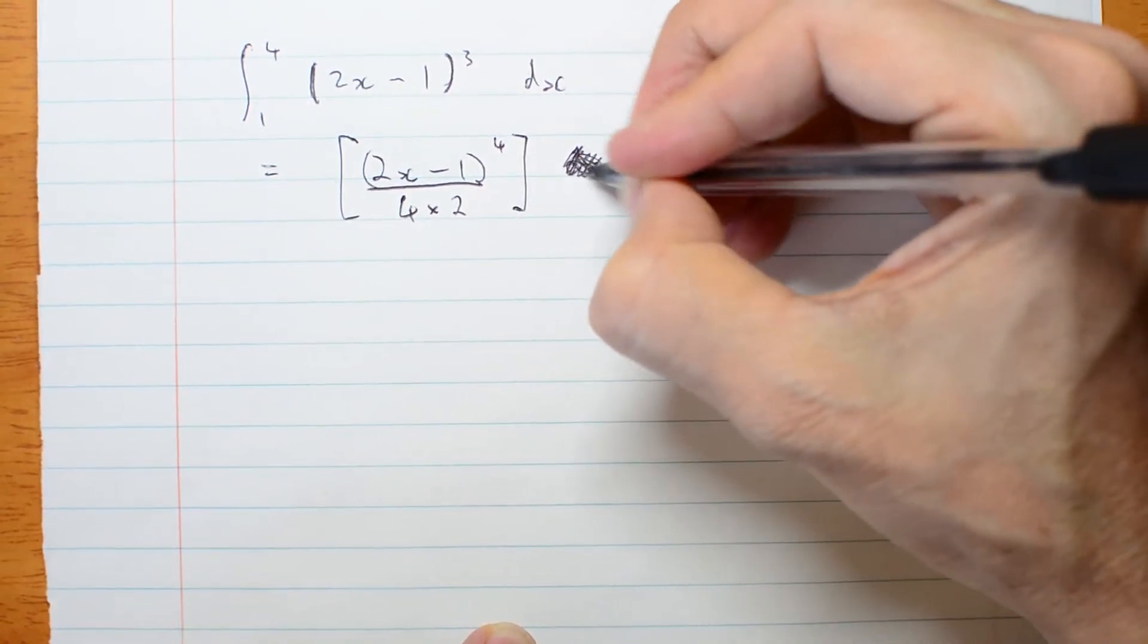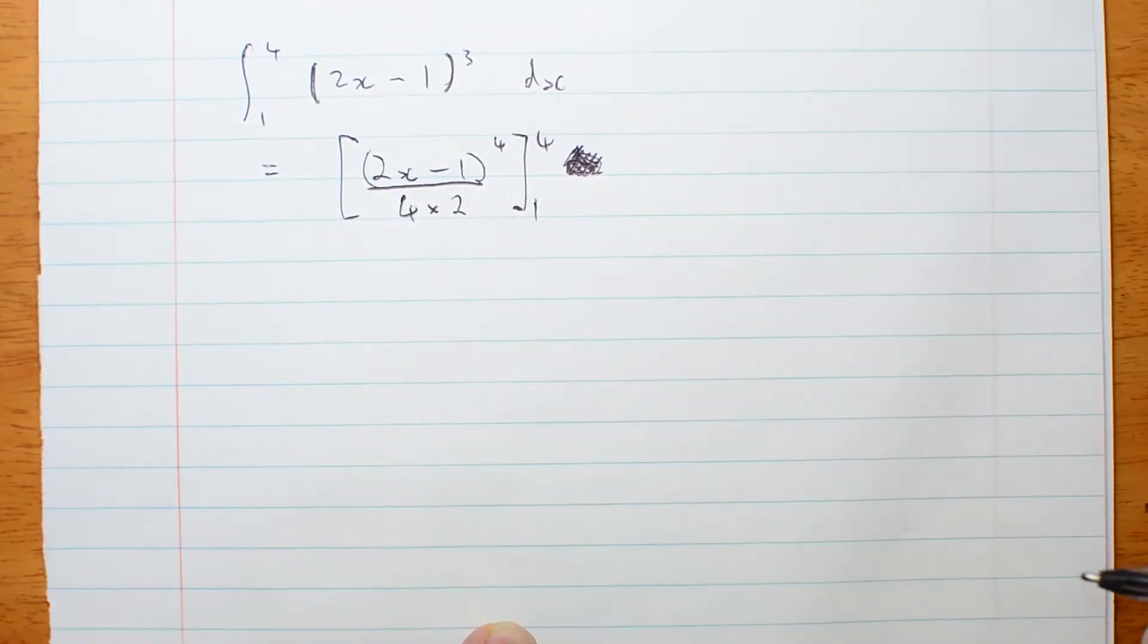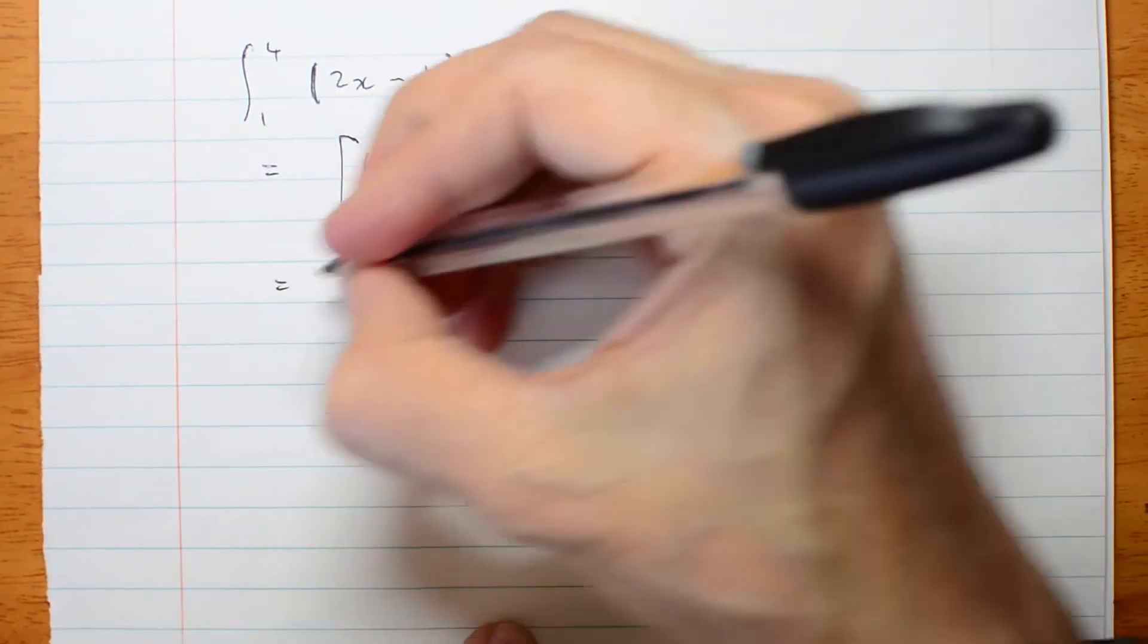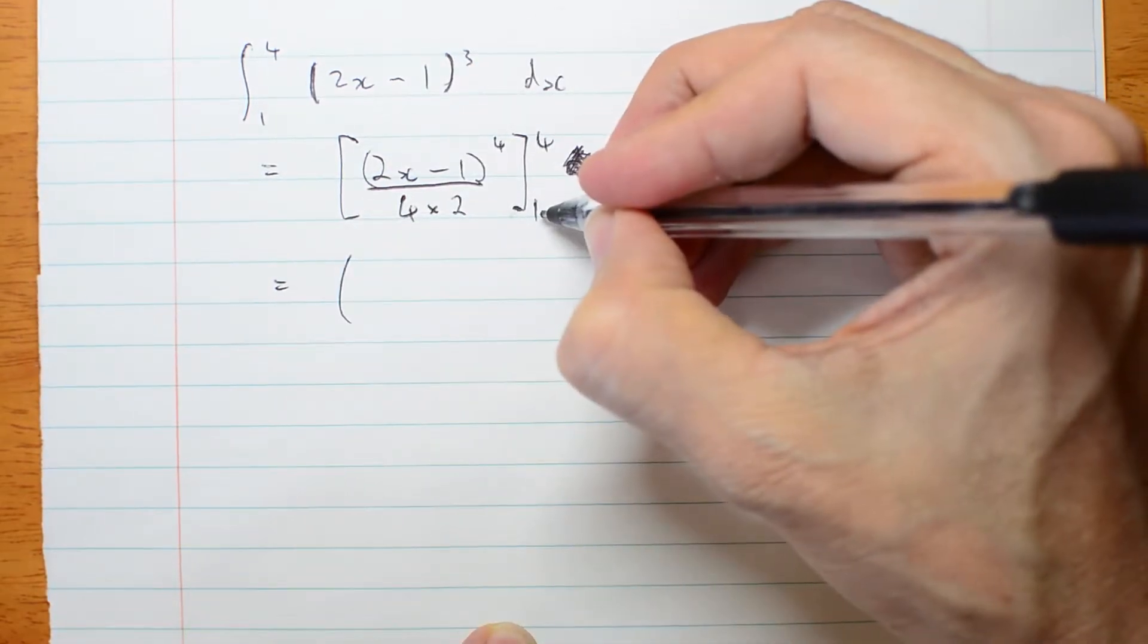Oh sorry, not dx. What am I thinking? From 1 to 4. Got a bit confused there. OK, so we're going to substitute it at 4 and then substitute it at 1 and subtract them.